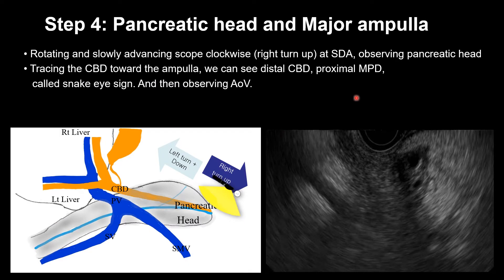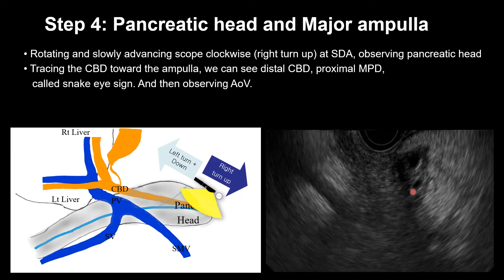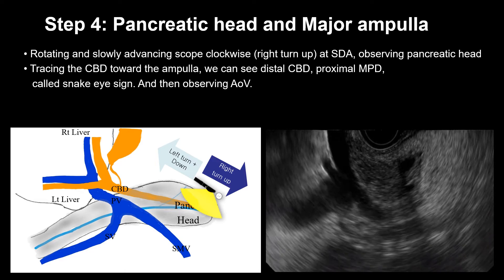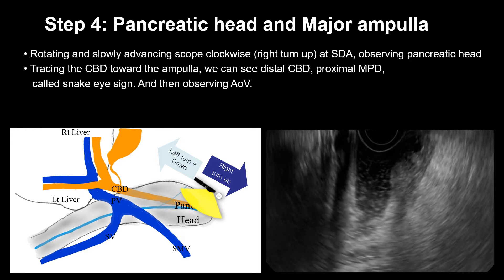For the pancreatic head and major ampulla, rotate the scope slowly with clockwise rotation at the superior duodenal angle, observing the pancreatic head area. Tracing the CBD towards the ampulla, we can see the CBD and proximal main pancreatic duct — we call it the 'snake eye' sign. This area shows the distal CBD and main pancreatic duct, similar to the snake eye. Then, pushing the scope, we can see the ampulla of Vater. Clockwise rotation reveals the ampulla of Vater.